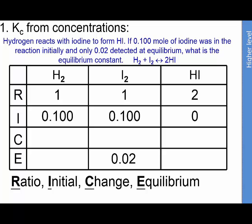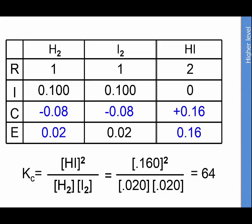RICE diagrams will help you solve even the most difficult K problems and prevent you from making mistakes or skipping steps. R is the reaction stoichiometry, I is the initial concentration, C is the change in concentration, E is the equilibrium concentration. Filling in the table is a little like playing Sudoku. Once done, the equilibrium concentrations are substituted in to get a final equilibrium constant.